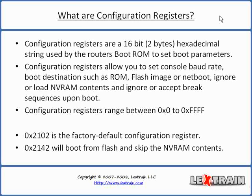Configuration registers range between 0x0 and 0xFFFF. The two configuration registers I'm primarily concerned about in this video are 0x2102 and 0x2142. 0x2102 is the factory default configuration register — it will boot the router into the first available IOS image found in Flash, with a console baud rate of 9600, the break command enabled, and if the image fails to boot it will automatically fall to ROM monitor mode. 0x2142 is very similar, except it skips the contents of the non-volatile RAM, which is your startup configuration.